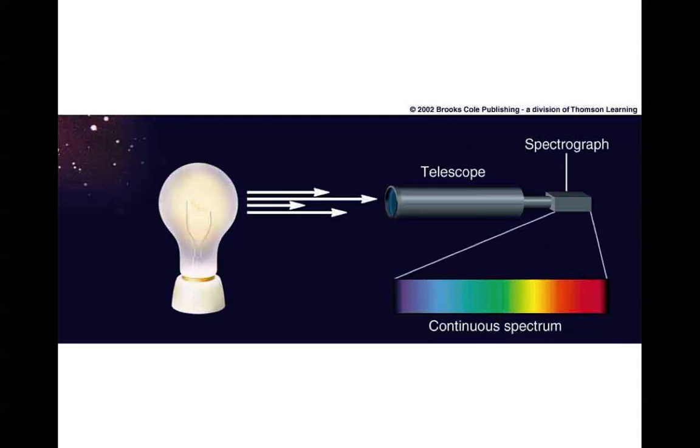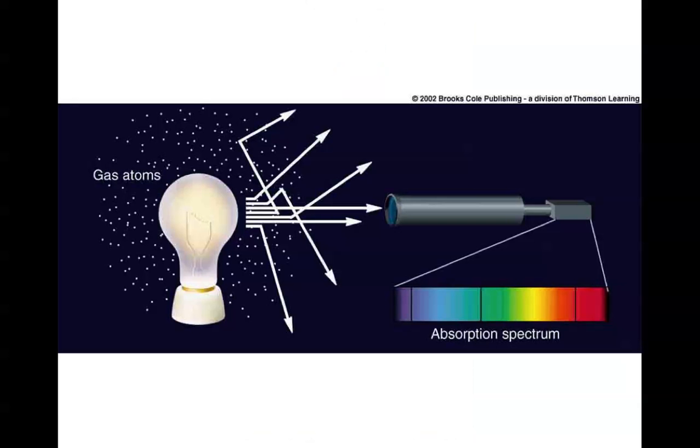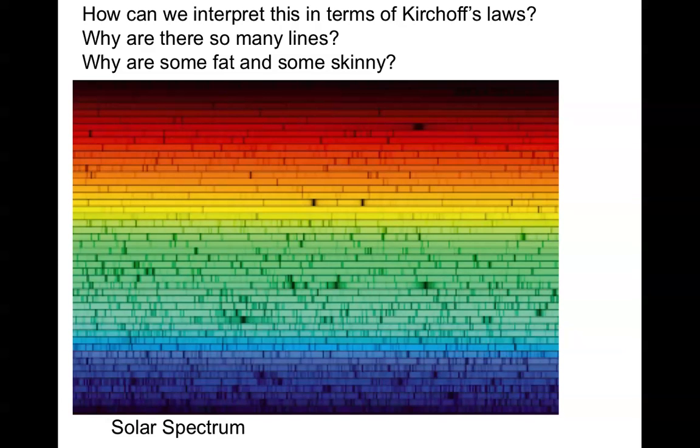So here again is our continuous spectrum, and we see the black bodies that we saw before, noting that the cooler one is emitting more in the red, and the hotter one is emitting more in the blue. When we look at the absorption spectrum by placing a gas in front of this black body, then we see something like this. This is a solar spectrum now spread out all the way from the blue to the red at very high dispersion. And we see it's got the colors of the rainbow, but in addition, a series of black lines.